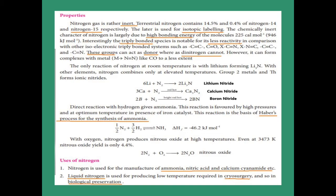Nitrogen reacts with lithium metal at room temperature to form lithium nitride, formula Li₃N. Calcium metal reacts with nitrogen at red heat (high temperature) to give calcium nitride, Ca₃N₂. Calcium has valency +2 and nitrogen has valency -3; applying the criss-cross method, we get Ca₃N₂. Boron also reacts with nitrogen at bright red heat to give boron nitride, formula BN.